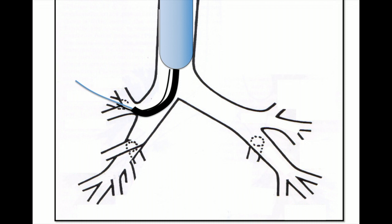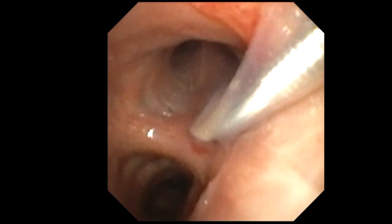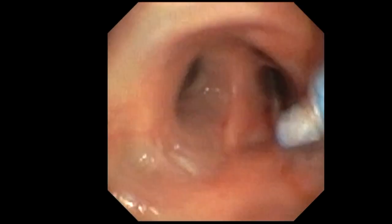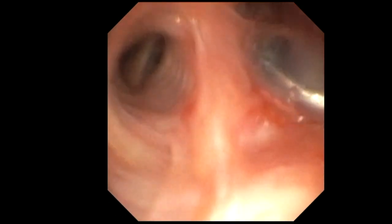After freezing for a few seconds, the cryoprobe is then withdrawn along with the bronchoscope while the balloon is inflated to tamponade any significant bleeding. In this case, a 4-French endobronchial balloon is placed in proximal RB2. The position of the balloon is then checked, and one of the procedural assistants is trusted with the sole responsibility of operating the balloon and ensuring it stays in place. The proximal end of the balloon can be taped to the rigid scope to facilitate the process.